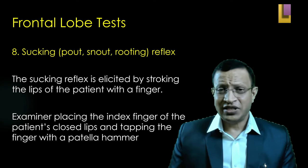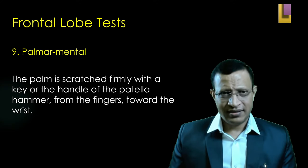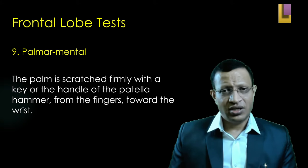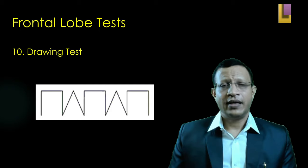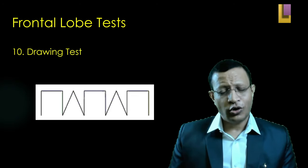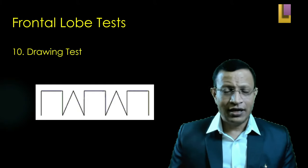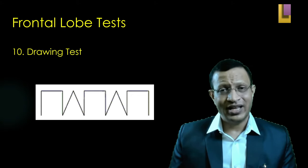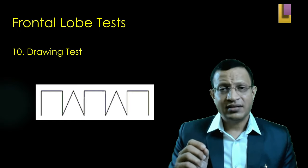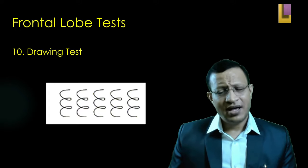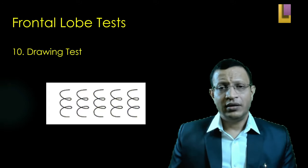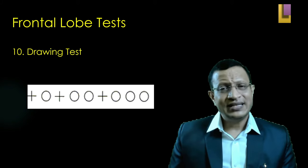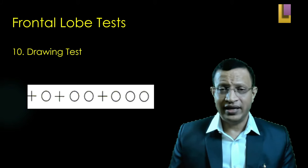Moving to the palmomental reflex — scratch the palm of the patient and observe for any twitching in the chin. Now, give the patient a pen and paper and ask him to copy a diagram. If there is a problem in the frontal lobe, many patients will show perseveration — they will not be able to stop and will continue drawing unless the pen and paper are taken away. You can also ask the patient to draw elliptical shapes or alternating plus-zero-plus-zero patterns, and observe whether the patient copies exactly or continues in a perseverative manner.